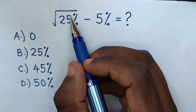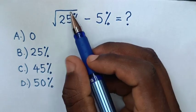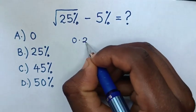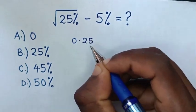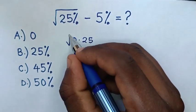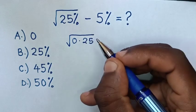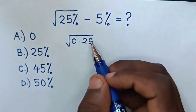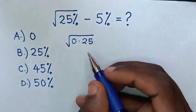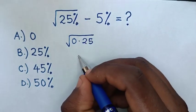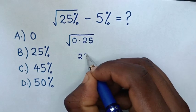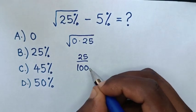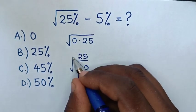First, we write square root of 25% into decimal, which is the square root of 0.25. Then we write this into a fraction, which is the same as the square root of 25 over 100.